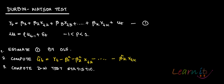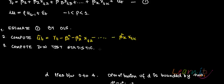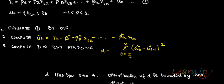What you will do then is compute the Durbin-Watson test statistic. d = [Σ(t=2 to n) (ûₜ - û_{t-1})²] / [Σ(t=1 to n) ûₜ²].